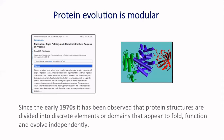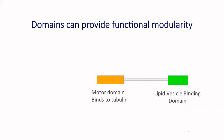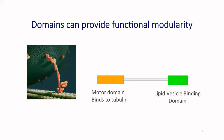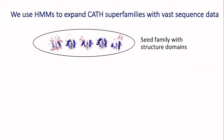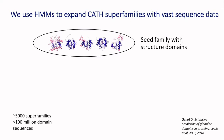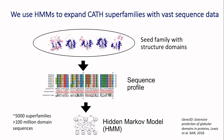First of all, just to remind you how useful domain information is — we've known for a long time that domains have a functional signal, although they can be combined in different ways. Usually the role of the domain is conserved. What we've done for more than 20 years now is to bring domains together into evolutionary superfamilies. We do that using structural information to begin with, and then once we have the structures classified we take the sequence information and build patterns of conservation which we use as hidden Markov models.